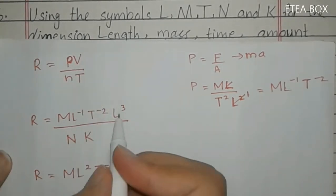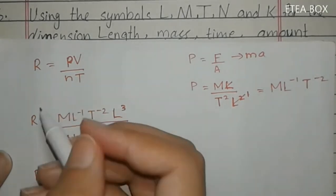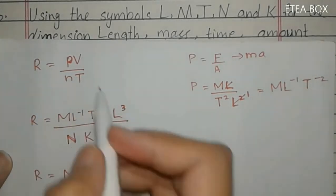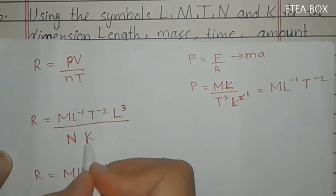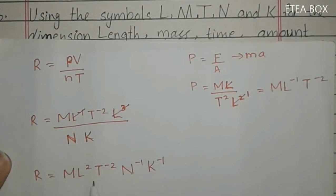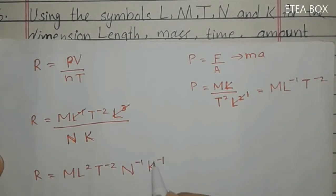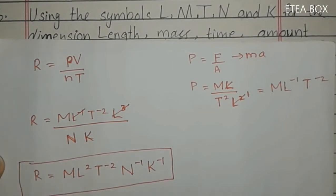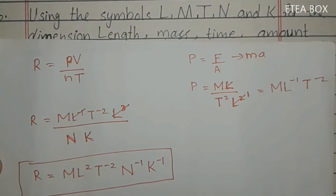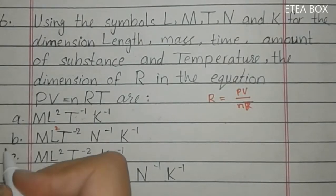For volume we use L³, for N (number of moles) we use capital N, and for temperature we use K. Subtracting: L³ divided by L gives L². So the dimension of R is M·L²·T⁻²·N⁻¹·K⁻¹. So here option B is correct.